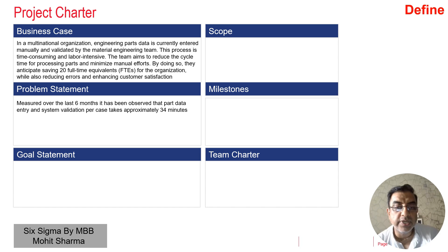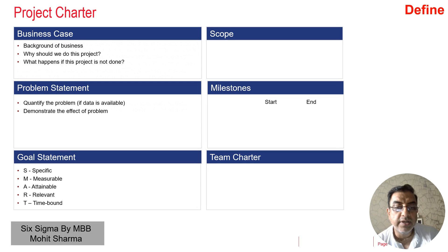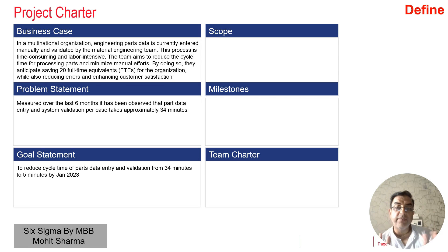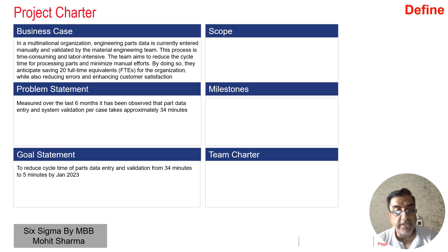The next element is the goal statement. A goal statement should be specific, measurable, attainable, relevant, and time-bound — that is, SMART. In this particular case, the goal is to reduce the cycle time of parts data entry and validation from 34 minutes to 5 minutes by January 2023, which is a SMART goal statement.